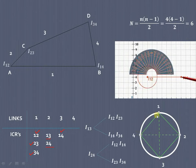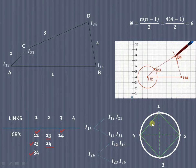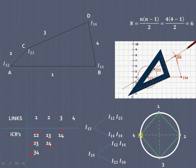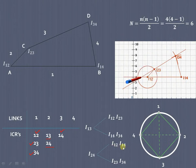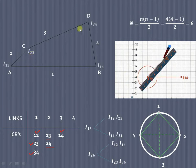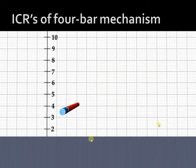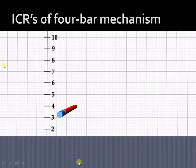Similarly, to find I₂₄, join nodes 2 and 4 on the circle diagram. This gives two triangles: 1–4–2 and 2–3–4. So I₂₄ is the combination of I₁₂ & I₁₄, and also I₂₃ & I₃₄. We extend the line joining I₁₂ and I₁₄, and also extend the line joining I₂₃ and I₃₄ — wherever these lines intersect gives us ICR I₂₄. We'll now see this with the help of animation.